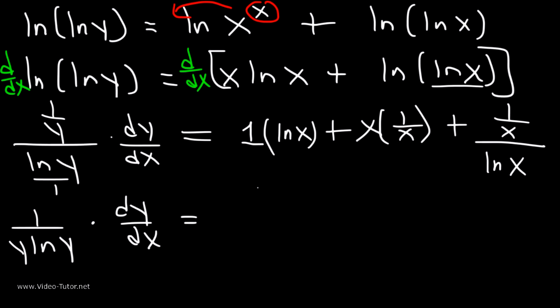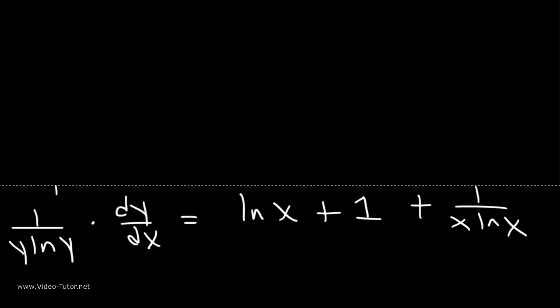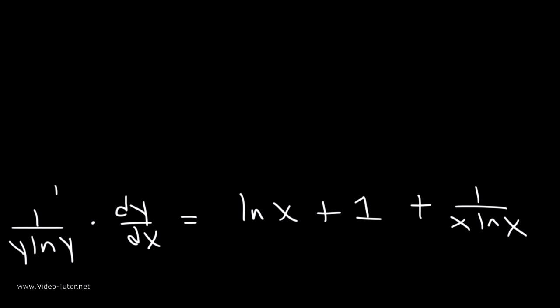So on the right side we just have ln(x). And x times 1/x is just 1. And 1/(x·ln(x)) stays as 1/(x·ln(x)). So our next step is to multiply both sides by y·ln(y).